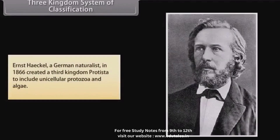In the 3 Kingdom System of Classification, Ernst Haeckel, a German naturalist, in 1866 created a third kingdom — Protista — to include unicellular protozoa and algae.